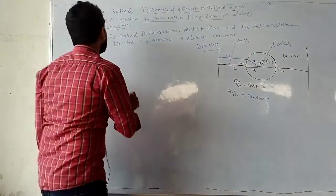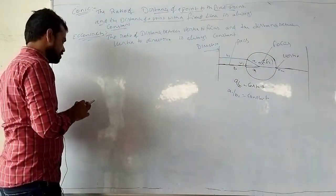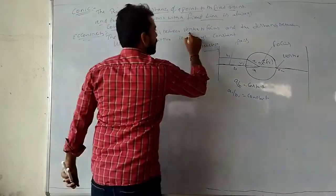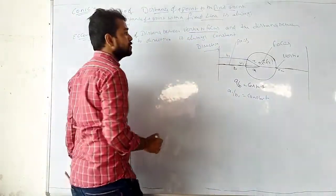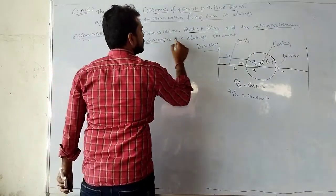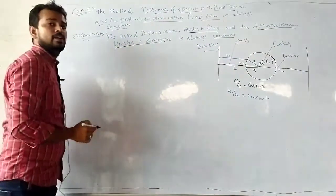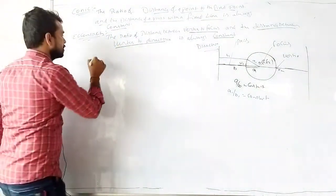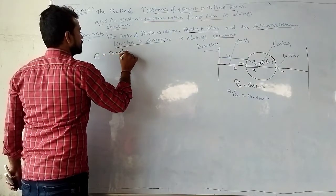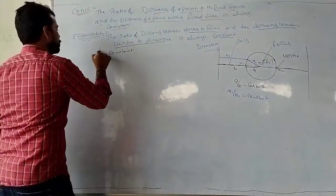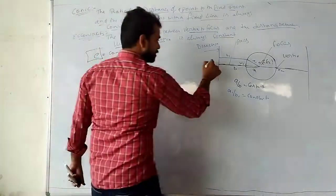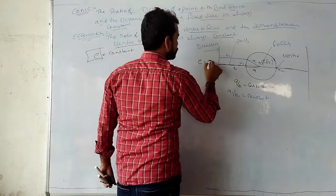What is eccentricity? Eccentricity is the ratio of the distance between vertex to focus and the distance between vertex to directrix, which should be constant. It is denoted by E. For a circle, E is equal to 0.